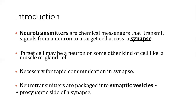The axon terminals of one neuron and the dendrites of the next neuron form the synapse — the gap between them. The neurotransmitter is released into this synaptic space for rapid communication. Neurotransmitters are packaged into synaptic vesicles on the pre-synaptic side. After synthesis, they are stored in these specific synaptic vesicles located at the axon terminal end of the pre-ganglionic neuron.